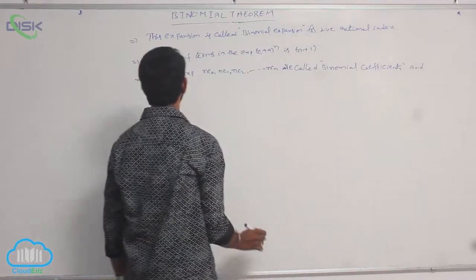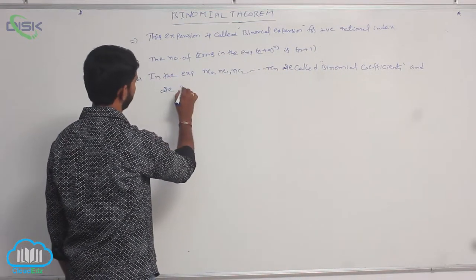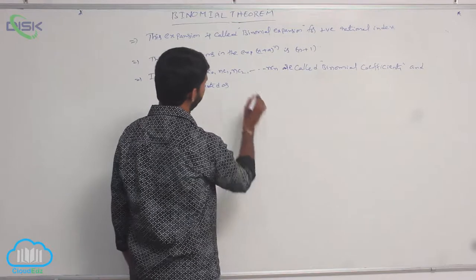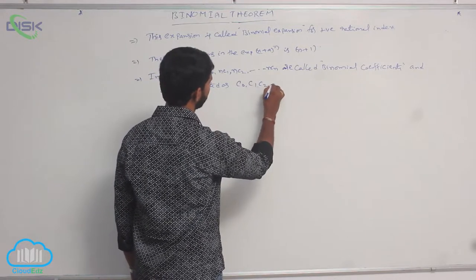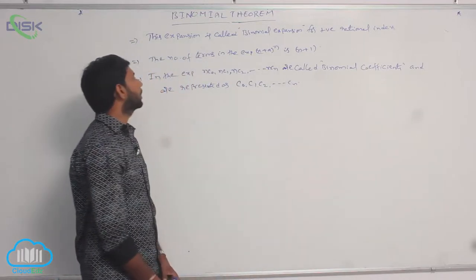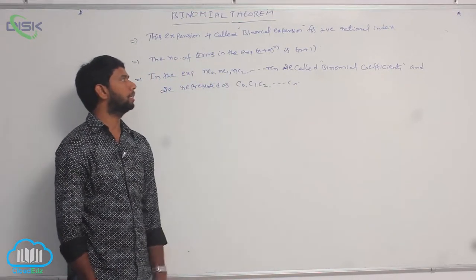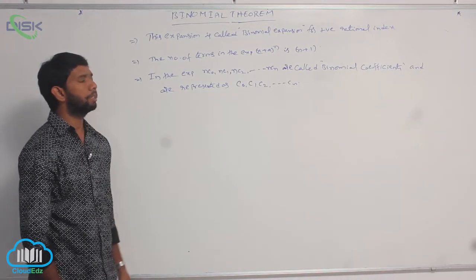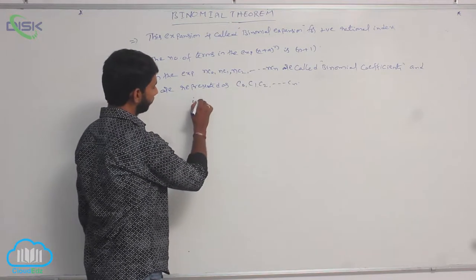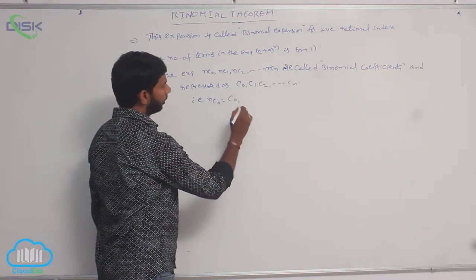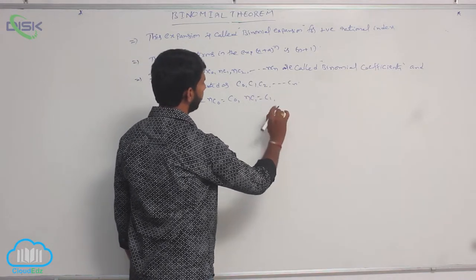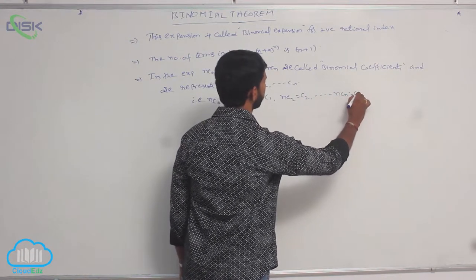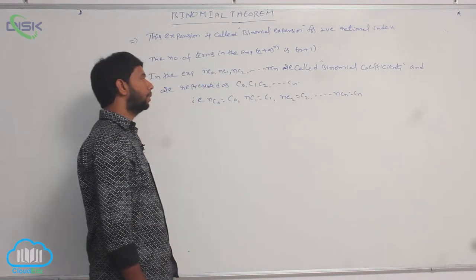These binomial coefficients are represented as C0, C1, C2, and so on up to Cn. That is, nC0 = C0, nC1 = C1, nC2 = C2, and so on, nCn = Cn.